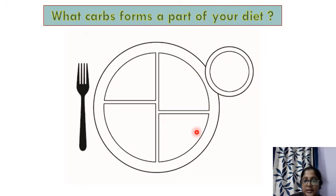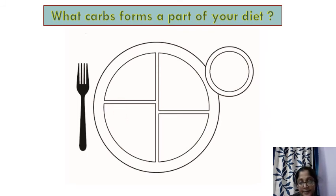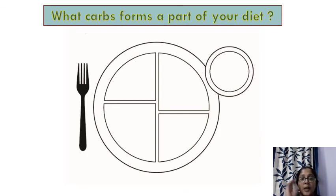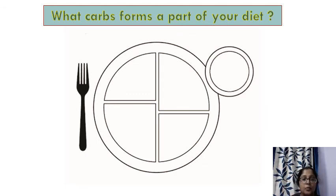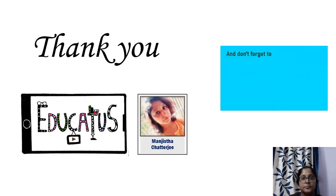Here is a plate. Fill it in with the type of carbs you are taking throughout the day — good or bad. Tomorrow, list down all the carbohydrates you consume and write them in the plate using the examples shown. That's all for today. Thank you so much.